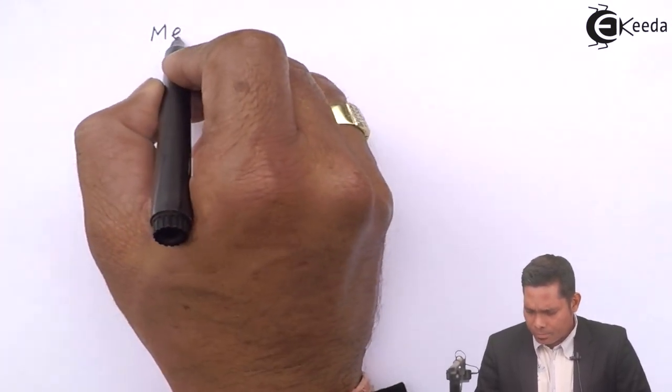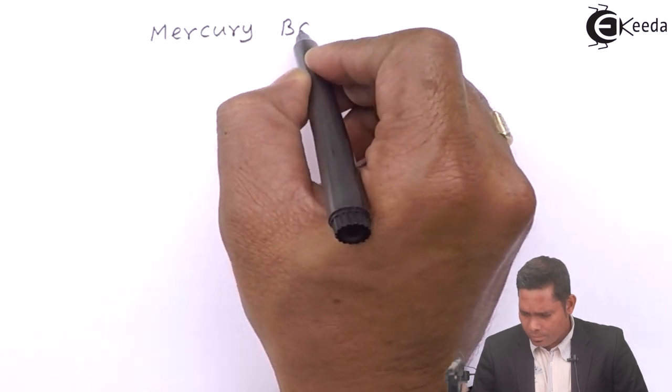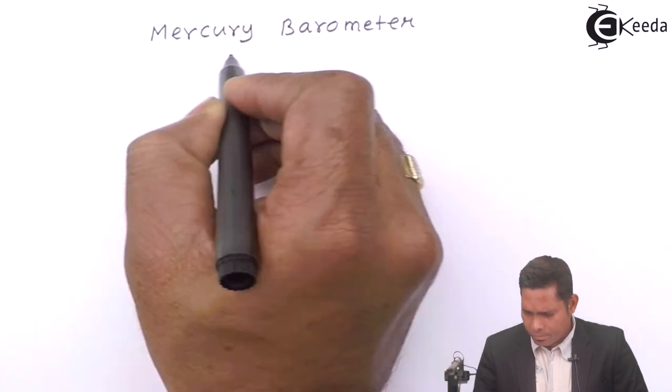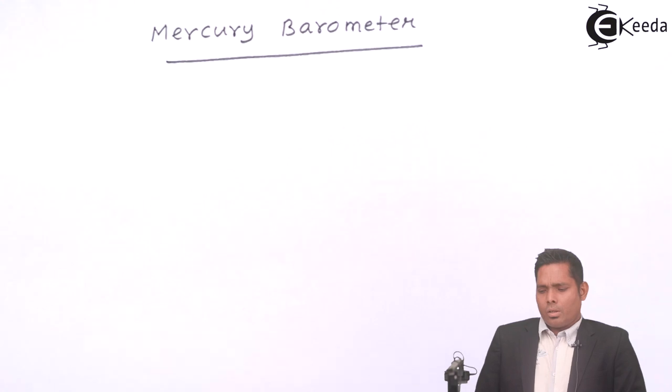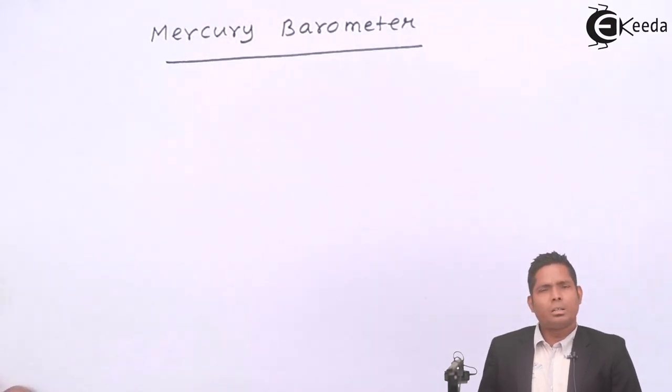What the instrument is used for - it is used for measuring the atmospheric pressure. So let us start with the Mercury barometer. Mercury barometer was designed by Italian scientist Torricelli.